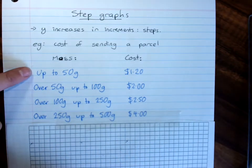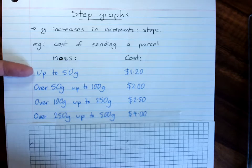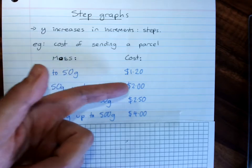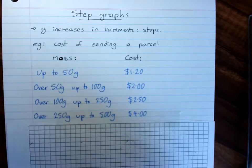Usually there's stages of different weights, up to 50 grams, it's this cost. Between 50 and 100, this cost. And if we want to graph that information, we use what's called a step graph.